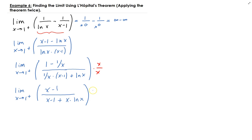Let's do a direct substitution. Plugging in 1, we get 0 in the numerator, 0 in the denominator, and ln(1) is 0, so we get an indeterminate result again. We need to apply L'Hôpital's theorem a second time.